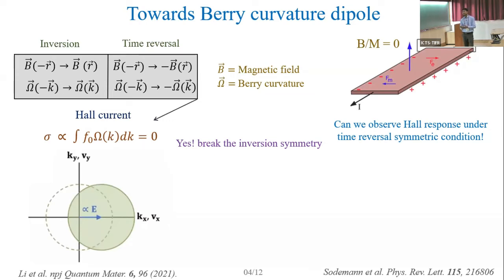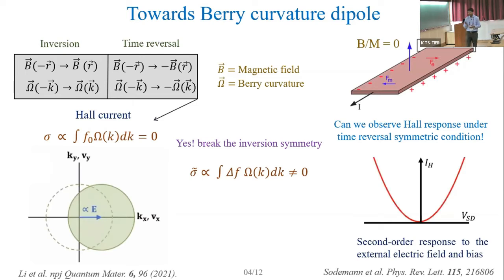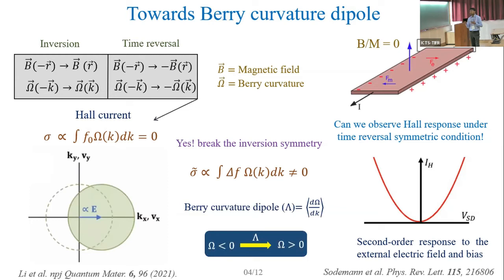We need to apply some in-plane electric field so that we can shift this Fermi sphere. The contribution from one part of the sphere is not equivalent to another part. We are affecting the distribution function. When we disturb this distribution function, we assign different weightage to the Berry curvature, and now the integration will not be zero. What is more interesting is that when we simultaneously disturb this distribution function and break the inversion symmetry, we get a non-linear dependency of current on voltage. But in usual Hall effect, we expect a linear dependency.